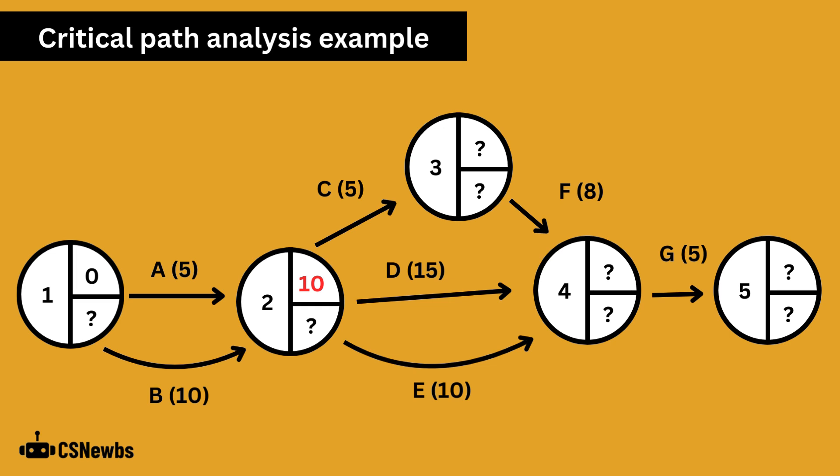The earliest start time of node 2 is 10 days, as it is dependent on both A and B being complete, and takes the value of the longest activity, which is the 10 days of activity B.